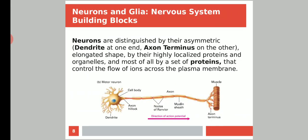Neurons and glia are the nervous system building blocks. Neurons are distinguished by their asymmetric elongated shape, by their highly localized proteins and organelles, and most of all by a set of proteins that control the flow of ions across the plasma membrane. These special proteins control the flow of ions through the membrane.